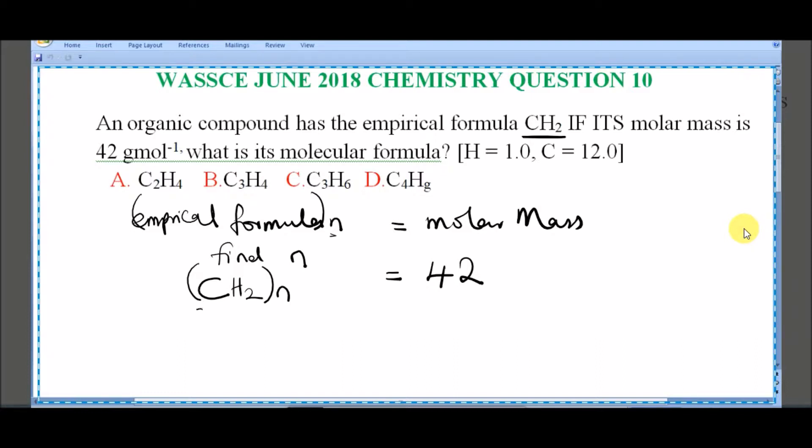You know that C from what is given here is 12, so in place of C we write 12 plus H. H from what is given here is 1, so in place of H you can say 1 times 2 because it's 2 times, it's going to be 2. Then close the bracket N equal to 42. So 12 plus 2 is 14, so we can say that 14N is equal to 42.